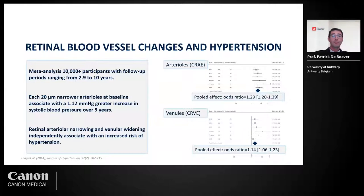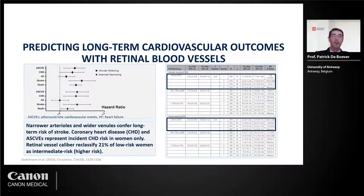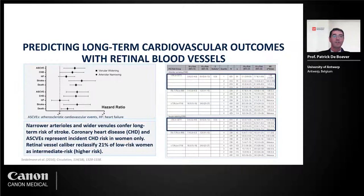This was really predictive: images taken at baseline were used to follow participants over more than 10 years, and the width of retinal vessels at baseline had predictive power for hypertension. A 2016 study from the same cohort type identified that narrowing of arterioles and widening of venules were linked with different cardiovascular outcomes — from atherosclerotic cardiovascular events to heart failure, stroke, and even death caused by cardiovascular disease.